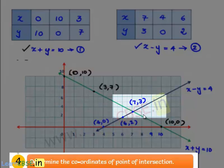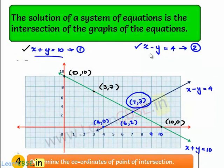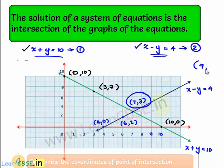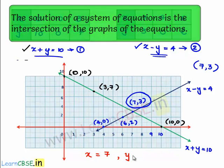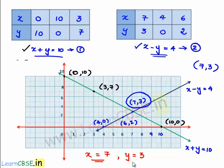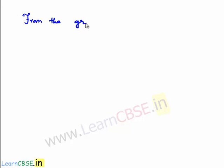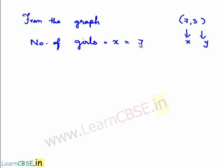If we observe, both straight lines meet at a common point which is (7, 3). So the point of intersection of the lines x plus y equals 10 and x minus y equals 4 is (7, 3). Therefore, the value of x is 7 and the value of y is 3. Since x is the number of girls and y is the number of boys, the number of girls is 7 and the number of boys is 3.